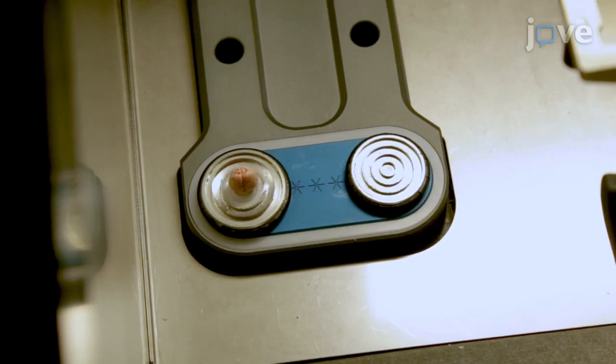Transfer the tissue holder back to the cryostat and expose the embedding medium to temperatures below minus 10 degrees Celsius for hardening.